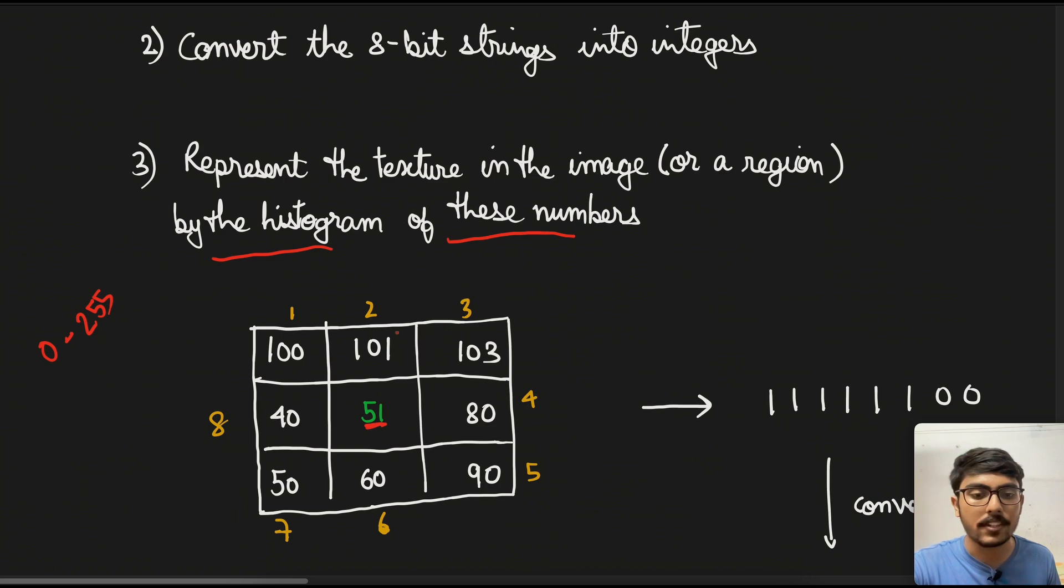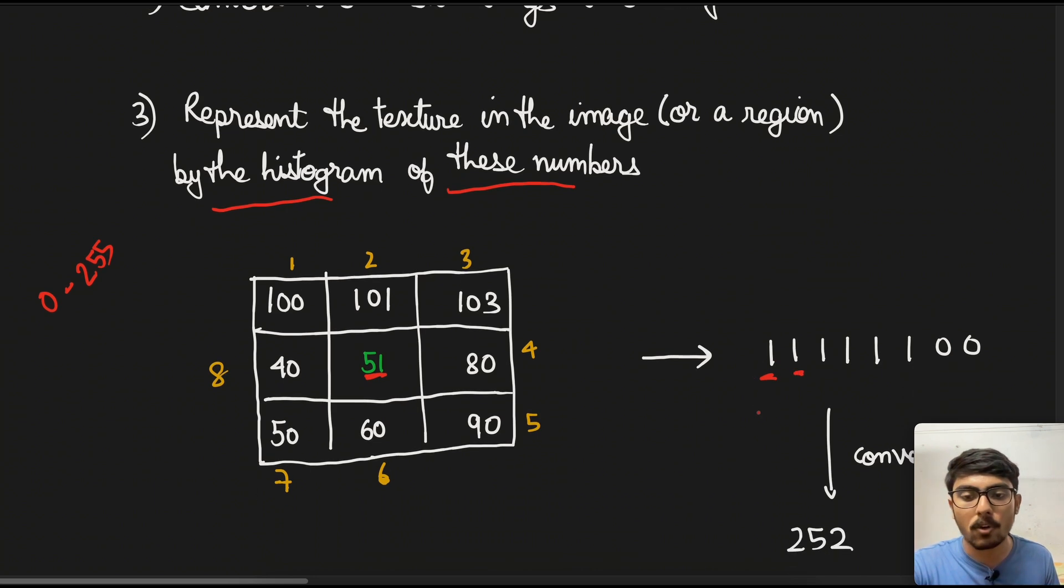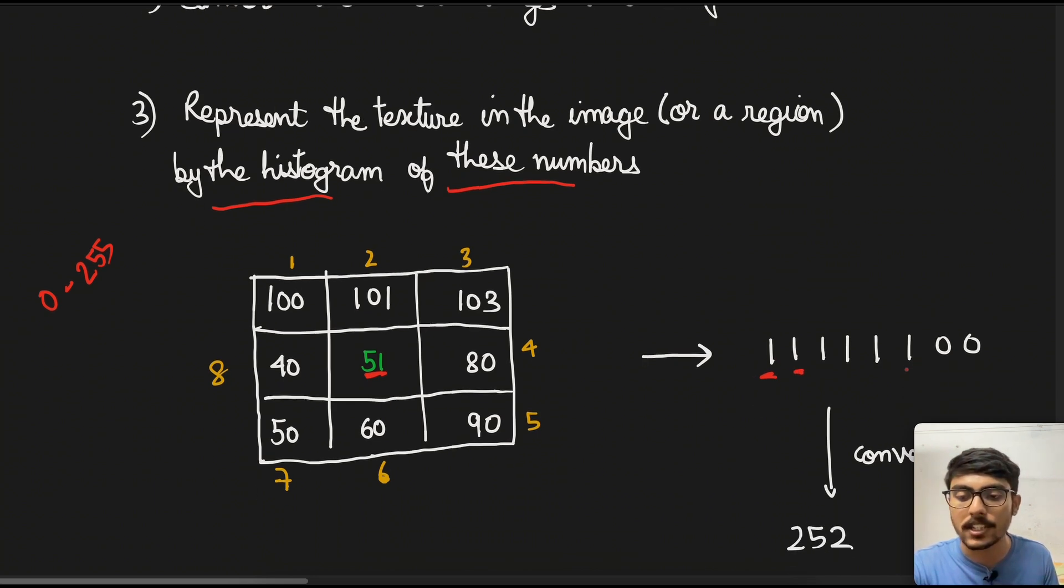As the definition says, all the values that are greater than or equal to will have one, and those values that are having less value will be zero. I have numbered the cells from one to eight and the center is what we are considering. We will be considering eight surrounding pixels. The first pixel is greater than 51, so it will be one. Similarly, for all the pixels it will be one where it is greater or equal to.